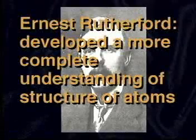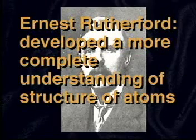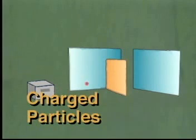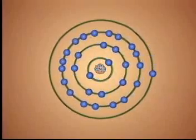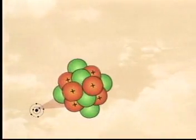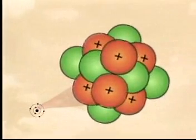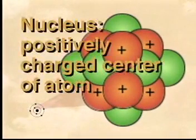In 1911, Ernest Rutherford added more to our understanding of the atom. He fired a stream of positively charged particles at a thin sheet of gold foil. He found that most particles passed right through the gold atoms in the sheet of foil, and concluded that the atoms were mostly made of space. Some particles, however, were deflected by the gold foil. He concluded that the atom had a small, dense, positively charged center that repelled the positively charged bullets. He called the center of the atom the nucleus.